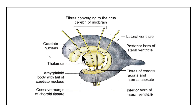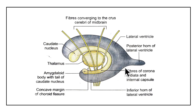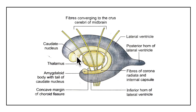Now let's learn about the corpus striatum in detail. The caudate nucleus is a C-shaped or comma-shaped nucleus which is surrounded by the lateral ventricle. The concavity of this C encloses the thalamus and the internal capsule. The caudate nucleus has three parts: a head, a body, and a tail.